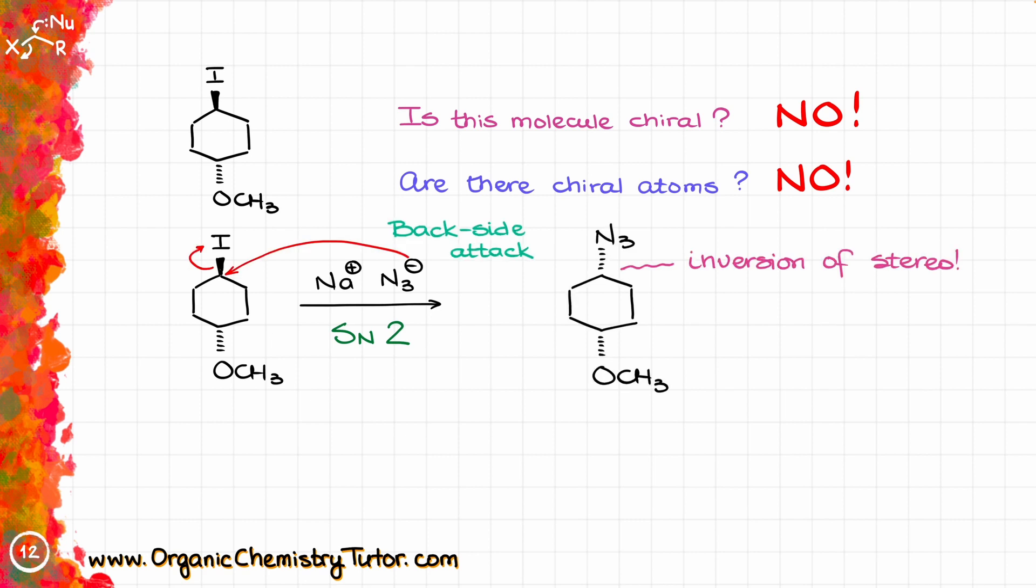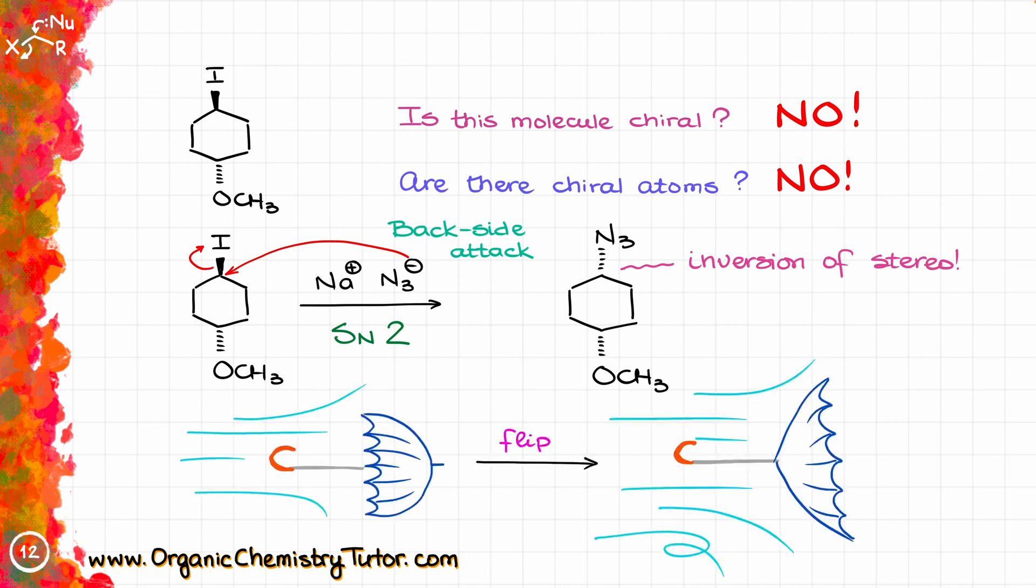The nucleophilic attack requires the backside approach to the electrophilic carbon in our molecule, so we will invert the atom in the process. Think about this as an umbrella flipping in a high wind. Exactly the same thing happens with your molecule.